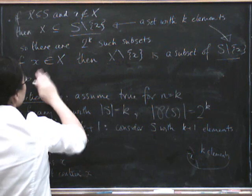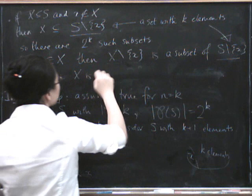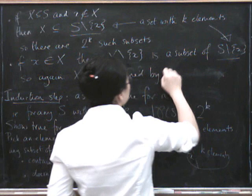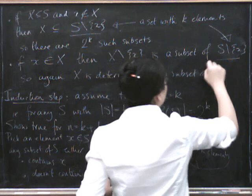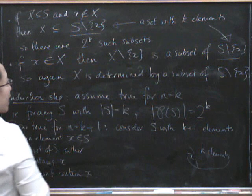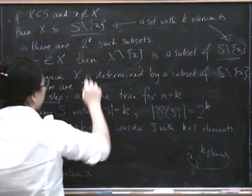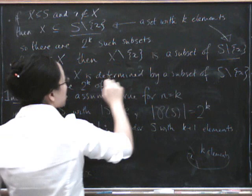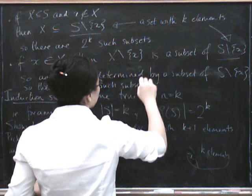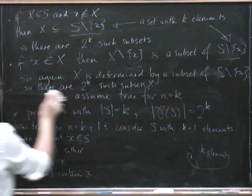So this is also a set with k elements. So there are, again, X is determined by a subset of that. So there are 2 to the k of these 2 to the k such subsets X. Now I've kind of run out of board again. Let's take this bit off.